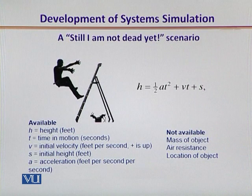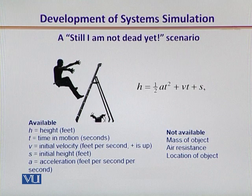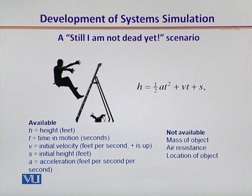If you look at this figure, it shows a man falling from a ladder. For the sake of generality, we can say that a man falls from the height h, the time it takes for him to strike the ground is t, his initial velocity is v, the initial height is given by s, and the acceleration with which he falls is typically well understood — minus 32 feet per second squared. This is the information that we have been given.